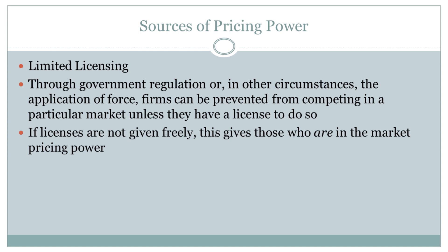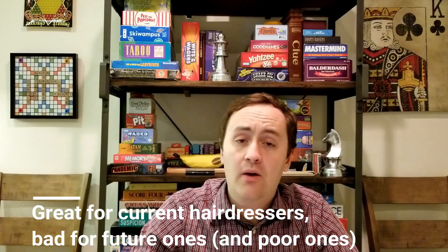Next up is limited licensing. Limited licensing happens whenever a government says: if you want to be in this business, you need to have a license, and we're going to limit the number of licenses available — either by literally capping them or by making them very expensive. For example, if you realize that people who cut hair are making a good profit and you want to come in and compete, it's going to cost you a lot of money to enter that market because you need to get the license — even if you already know how to cut hair. That is a barrier to entry that limits competition and keeps you from competing, allowing the people currently in the market to have some amount of pricing power.